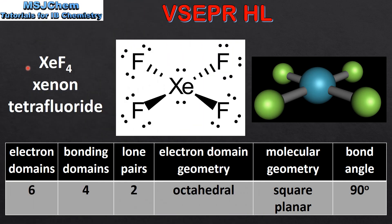In our last example we have XeF4, which is xenon tetrafluoride. By looking at the Lewis structure we can see there are 4 bonding domains and 2 lone pairs of electrons around the central atom. The electron domain geometry is octahedral. The molecular geometry is square planar and the bond angle is 90 degrees.